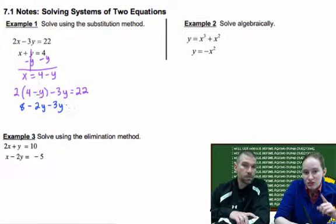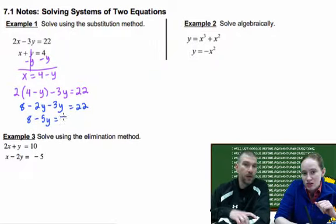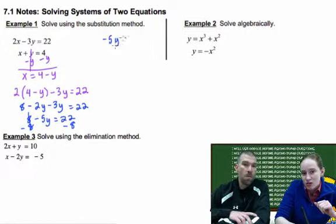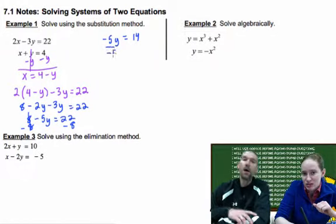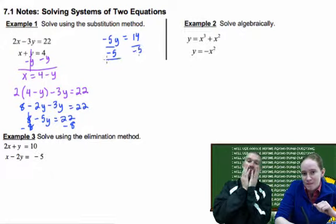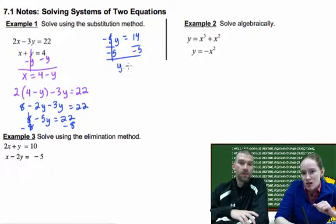So I substituted the 4 minus Y into the X for the first equation. So now to finish solving this, I distributed. Now I have terms that I have to add and just put them all together. Now it's an Algebra 1 question, and we solve that sucker for Y, and we'll get a final answer. Negative 5Y equals 14? 22 minus 8 is 14? I believe so. Oh no, a fraction.